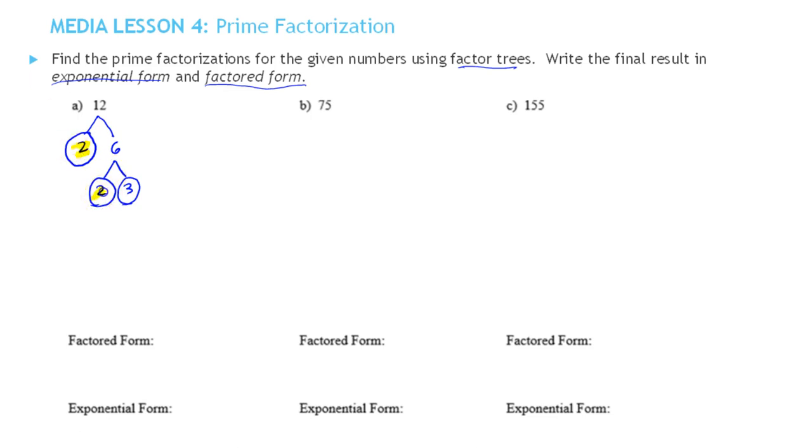These three numbers, their product, is called the prime factorization of 12. So in factored form, write your numbers from least to greatest. We have 2 times 2 times 3. And in exponential form we would write two factors of 2 as 2 squared, and there's just one factor of 3 so it's 3 to the first, but we just leave it as 3.